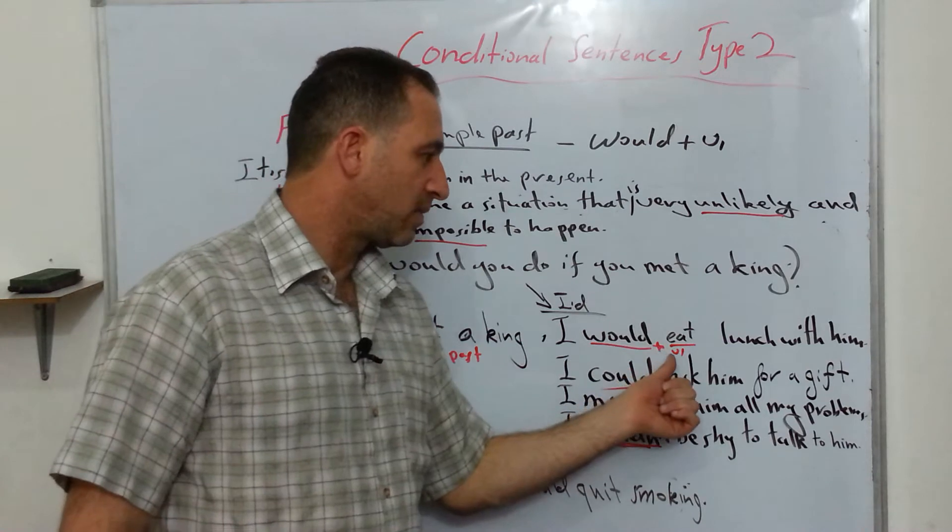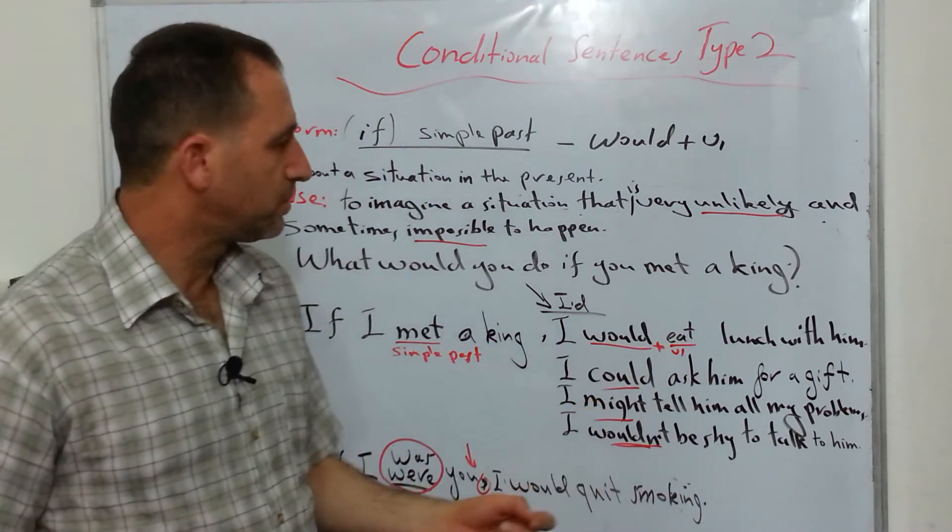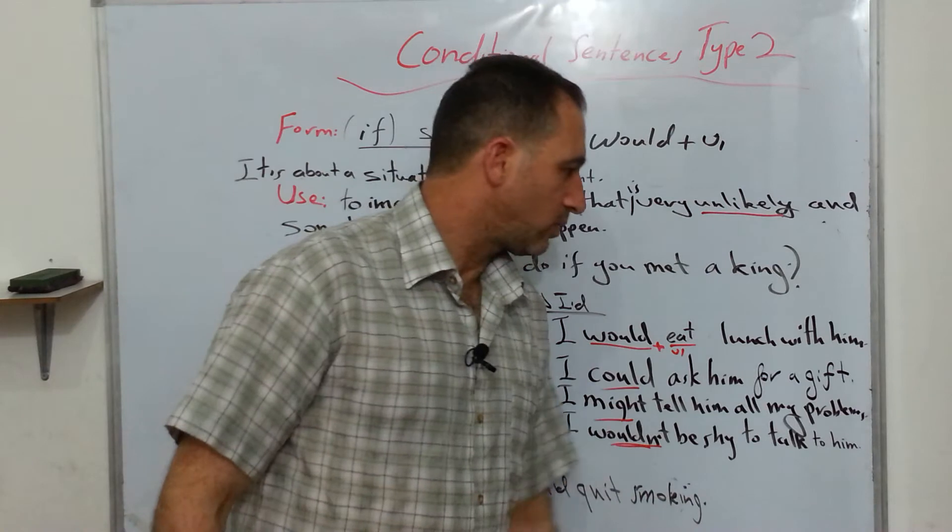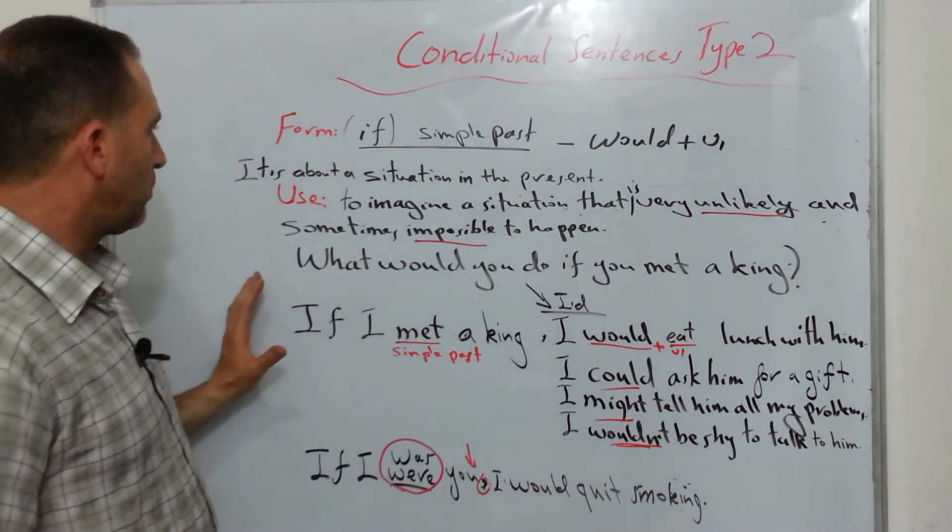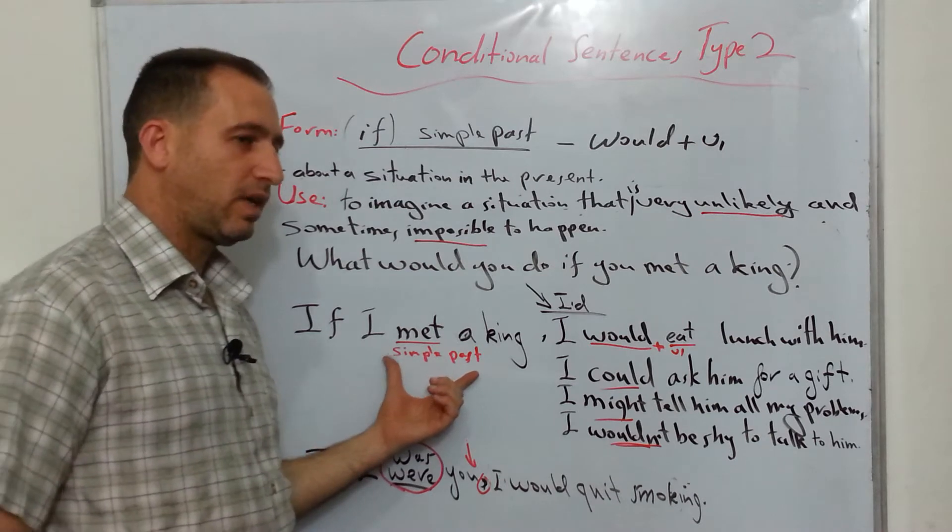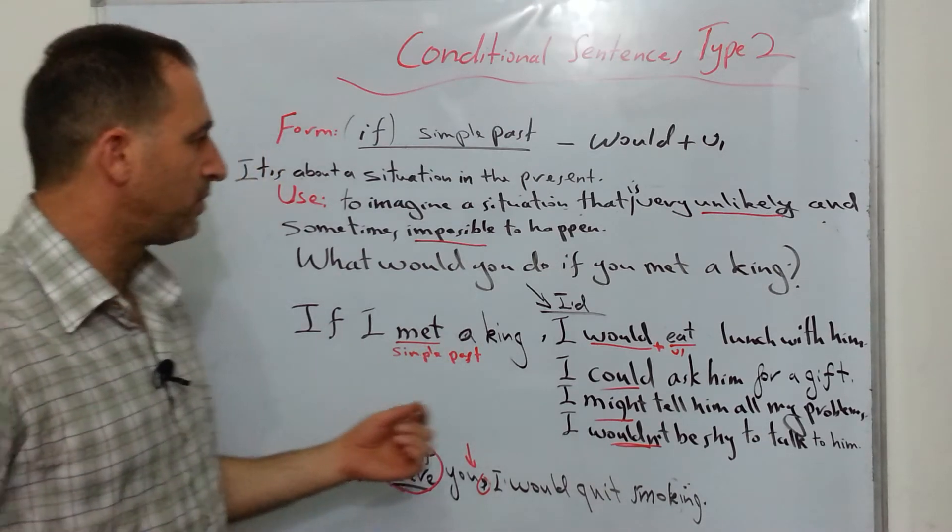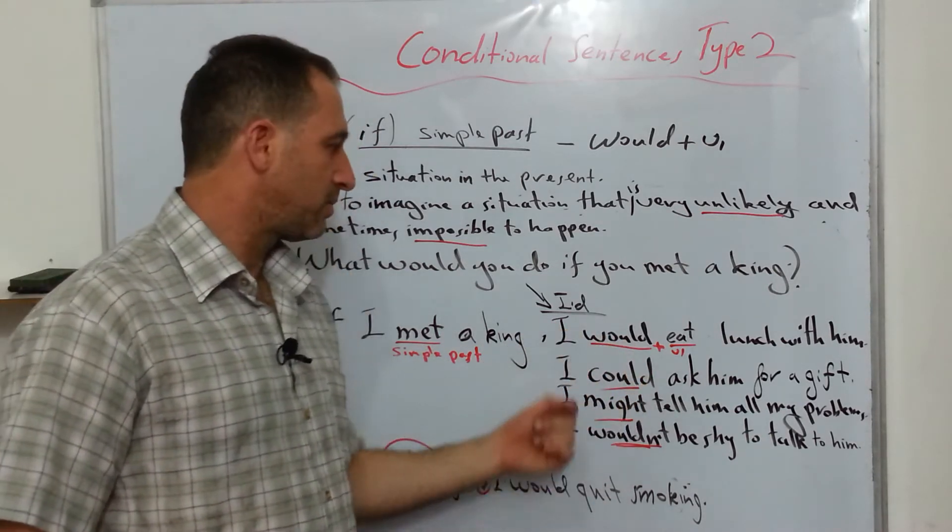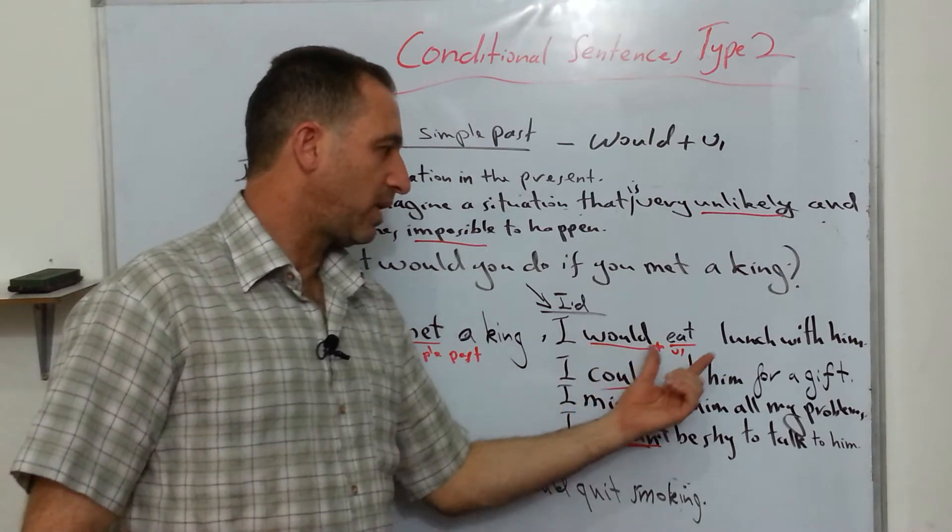Would eat, would plus verb 1, what I call verb 1, would eat lunch with him. So this is how the form is. You have if clause, in the if clause you have a simple past. In the second part, you have would plus verb 1.